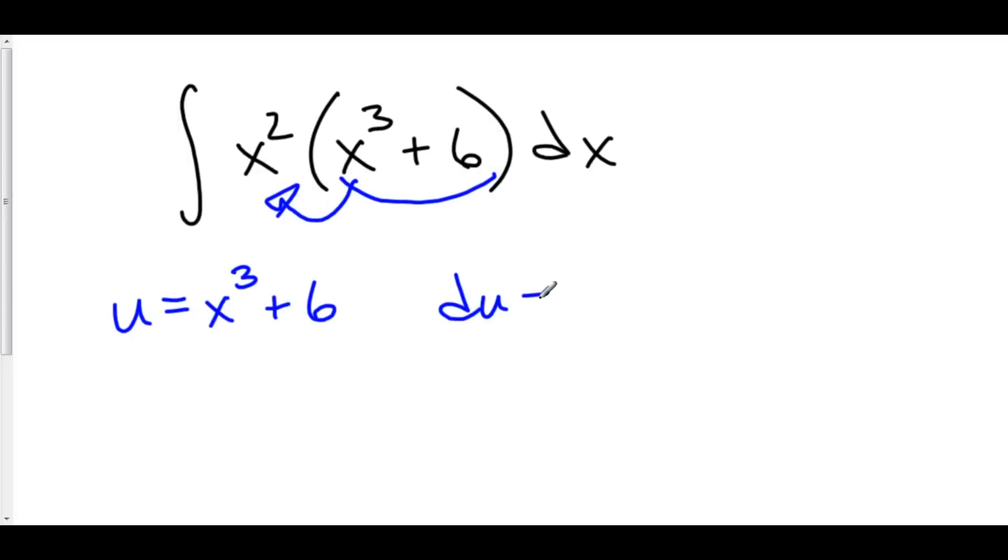That means that du is equal to, well, the derivative of x cubed is 3x squared plus the derivative of 6 which is 0 dx. Because I multiply top and bottom by dx here, we have du over dx.